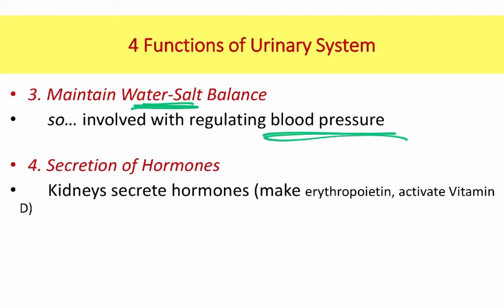Finally, the kidneys are involved in creating and secreting certain hormones. They make EPO — erythropoietin — which is a hormone that signals stem cells in red bone marrow to increase the production of erythrocytes, or red blood cells. The kidneys also take the vitamin D that the skin produces and activate it. That activated vitamin D, which is a steroid hormone, acts in the small intestine to increase the absorption of calcium.